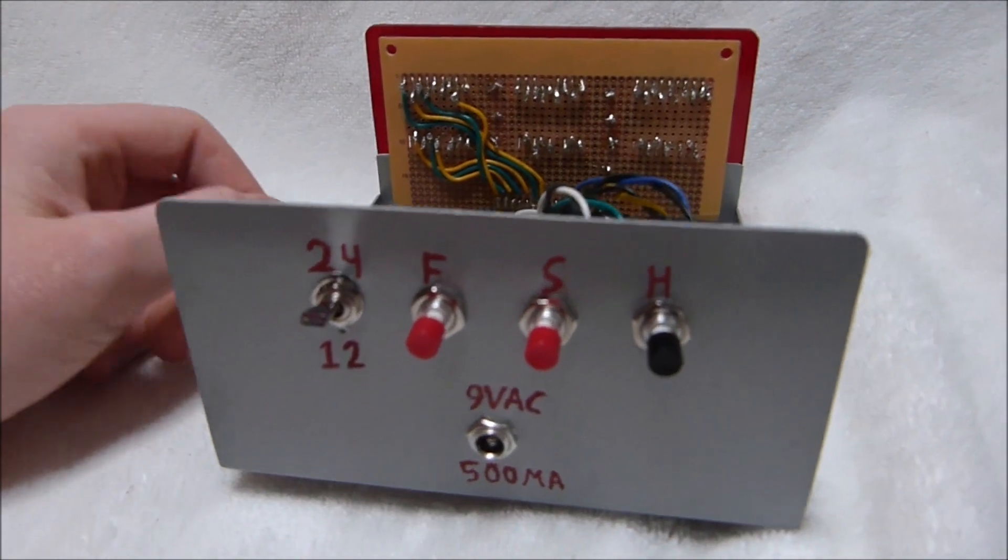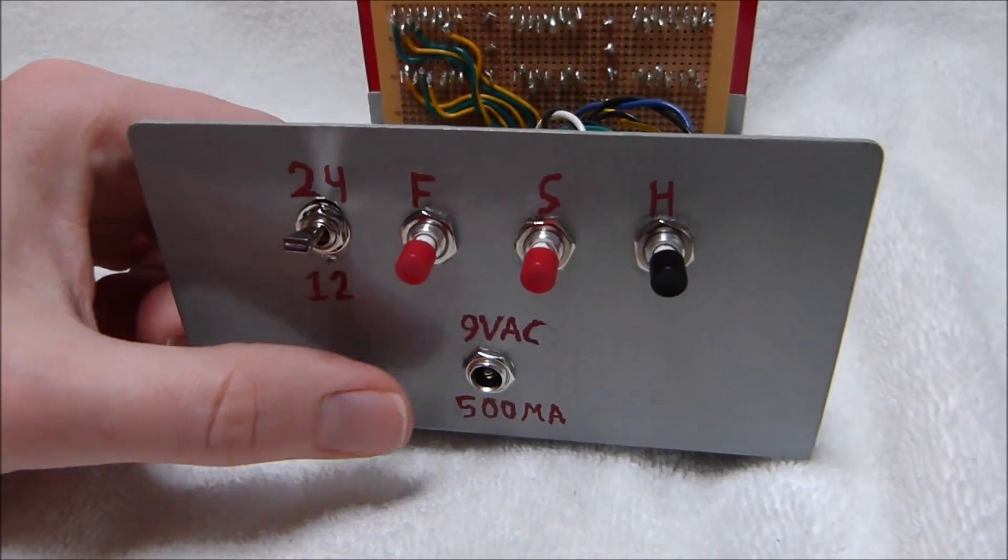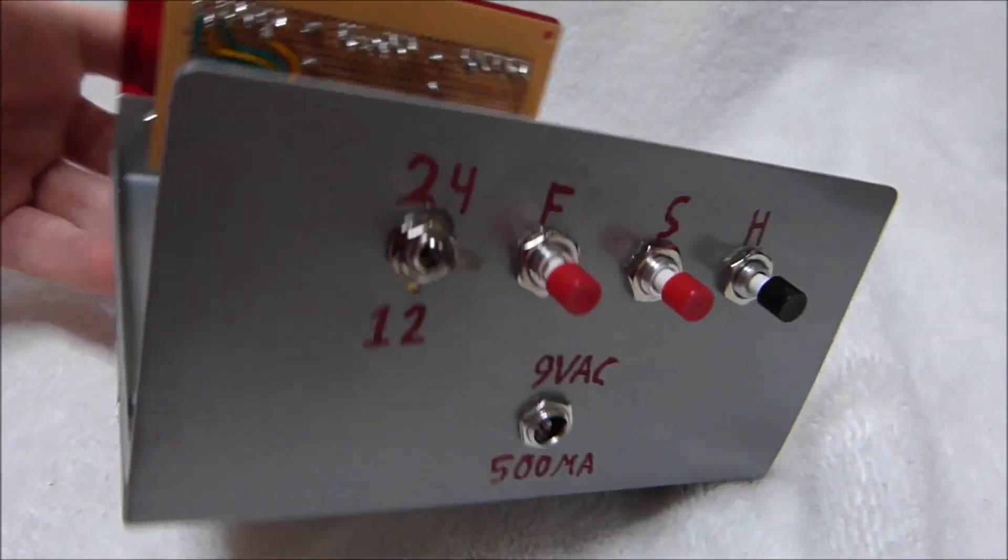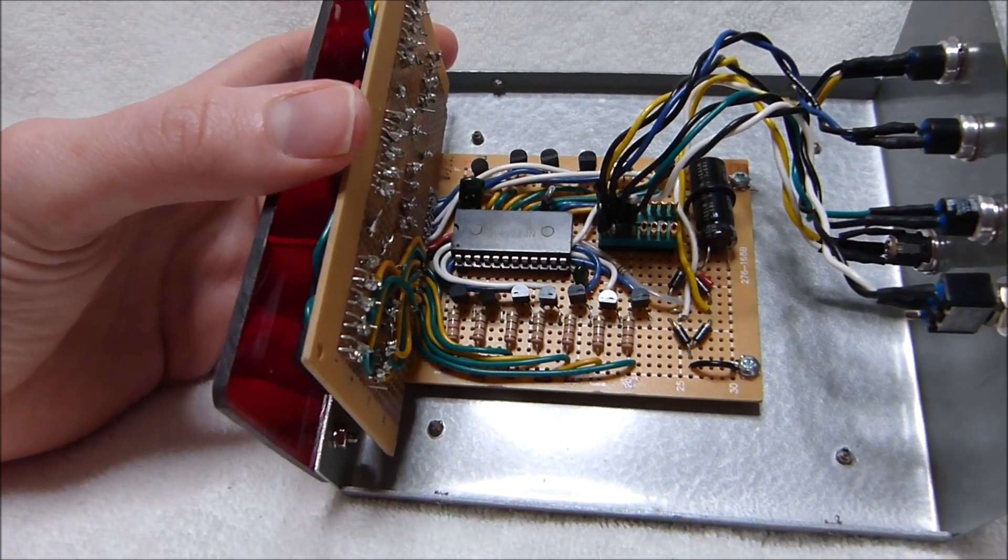Just because very few early digital clocks used wall warts, they generally used an internal transformer. Although there were some that did use wall warts.